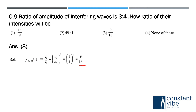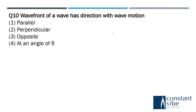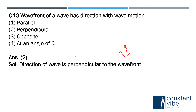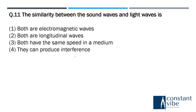Question ten: the wave front of a wave has a direction with the wave motion that is perpendicular. The wave front is perpendicular to the direction of wave motion. Next: the similarity between sound waves and light waves — the answer is option four, they can produce interference; both sound waves and light waves can produce interference.